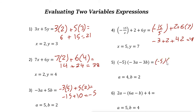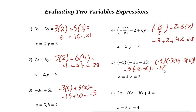Next, for negative 5 times the quantity negative 3a minus 3b, where a equals 4 and b equals 2. Inside the parentheses: negative 3 times 4 is negative 12, minus 3 times 2 is negative 6. So inside is negative 12 minus 6, which is negative 18. Then negative 5 times negative 18 is positive 90.